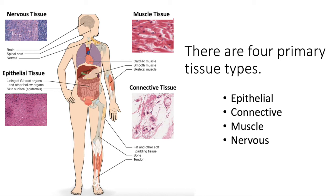Muscle tissue is specialized to contract. There are only three types of muscle tissue, categorized based on their function. Skeletal muscle tissue is all the muscle you're probably familiar with, like your biceps, triceps, and gluteus maximus. Your heart is composed of muscle, but that's specifically cardiac muscle. Smooth muscle is found in the walls of hollow organs like the stomach, blood vessels, gallbladder, small intestine, uterus, and urinary bladder — it's involuntary, as is cardiac muscle tissue.